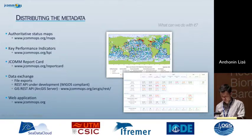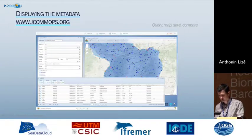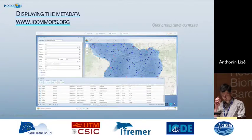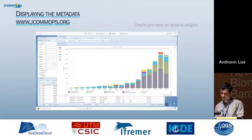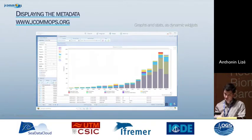Finally, our most visible product is our website — a web portal and web application where you can query our whole database through different criteria and map the different elements in the system. You can create a profile, save your query, compare different queries, leave the site, come back afterwards, and retrieve the same state as when you left. You can compute statistics and show graphs, and these are made as dynamic widgets — if you change the query, they update automatically to reflect the current sample you have built.